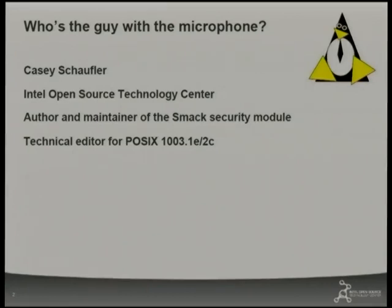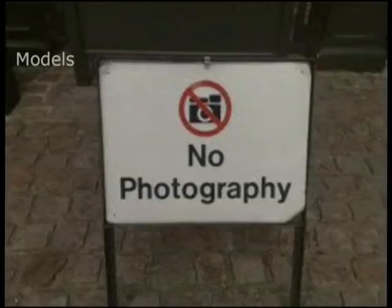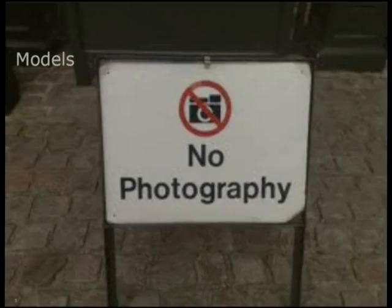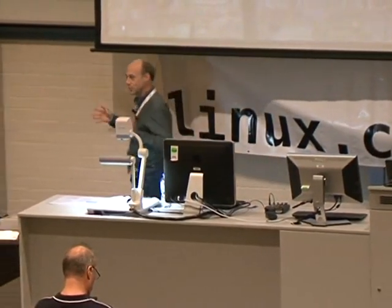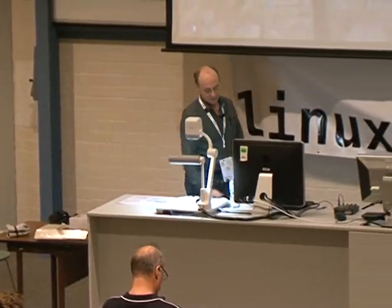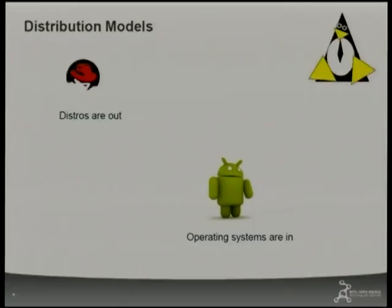What am I going to talk about today? I'm mostly going to talk about security models — how security models are interacting today, how things are arising, and how they're evolving. We're changing our models in computer security. We're changing them rapidly, dramatically, in ways nobody has anticipated and nobody has really been looking for.